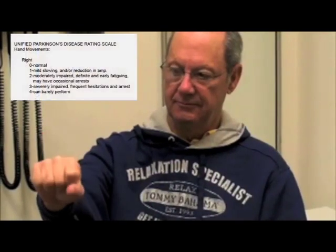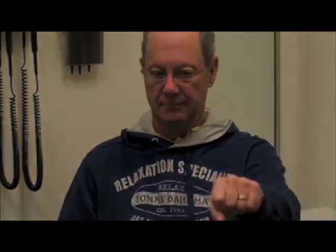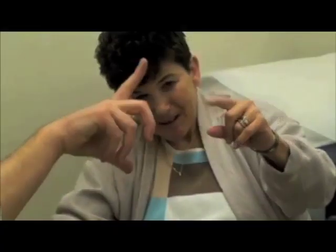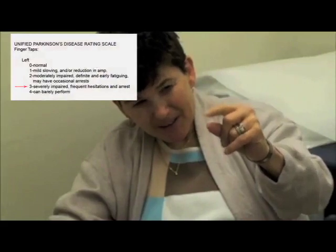This second gentleman we would probably score a two, as he has a few hesitations in these rapid repetitive movements, especially on the right upper extremity. This third person is a lady with much more significant bradykinesia — she has frequent hesitations in performing these repetitive movements with very decreased amplitude and decreased speed. And this fourth gentleman is barely able to perform the task at all, so this would probably be graded a four on the UPDRS.